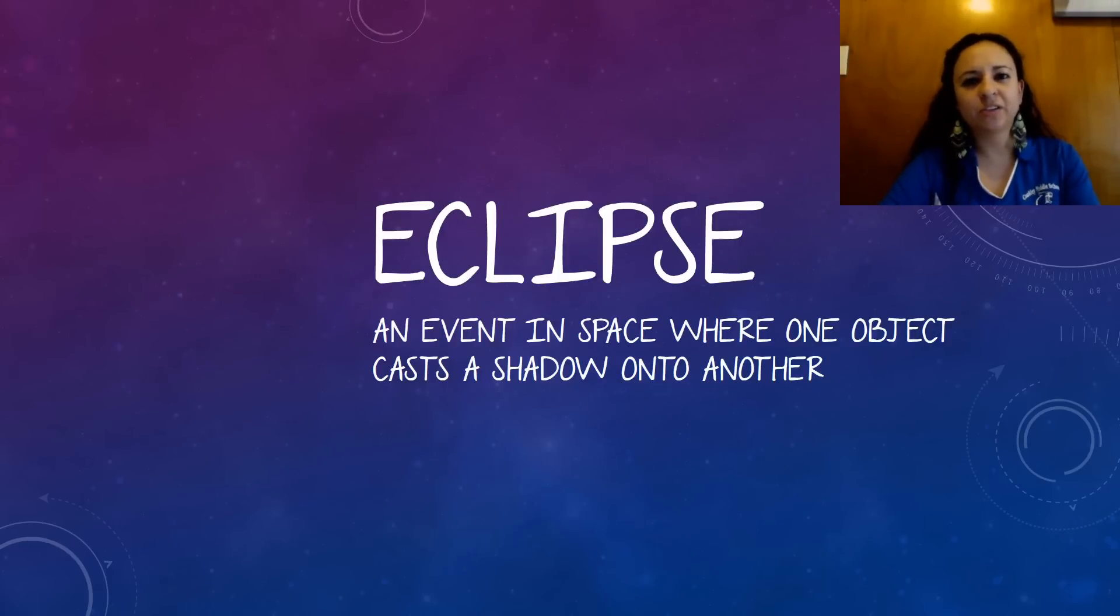The first word that we're going to learn together is the word eclipse. Eclipse has two syllables and in sign language you stick out your pointer fingers and your thumb and you kind of slide them together. So here's eclipse. I'm going to teach you two more signs. The next one is space. You're just going to take your right hand if you're right handed and just kind of wave it around in space.